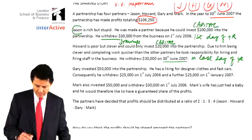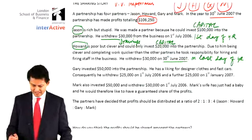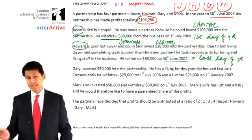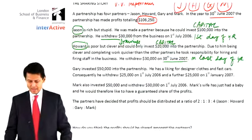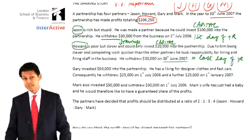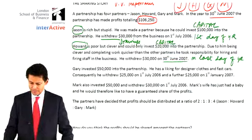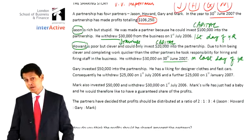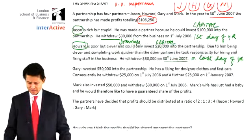The charm of a partnership is the various skills people have and their personal characteristics. Howard is poor but clever; he could only invest $20,000. Due to being clever, he has extra responsibility and might get a salary. Then at the end of the year, because he's clever, he waited until the last day to withdraw his $30,000 — the same amount as Jason, but Jason did it on the first day of the year, immediately after putting in his $100,000. So Jason is charged interest on the $30,000, whereas Howard is not.